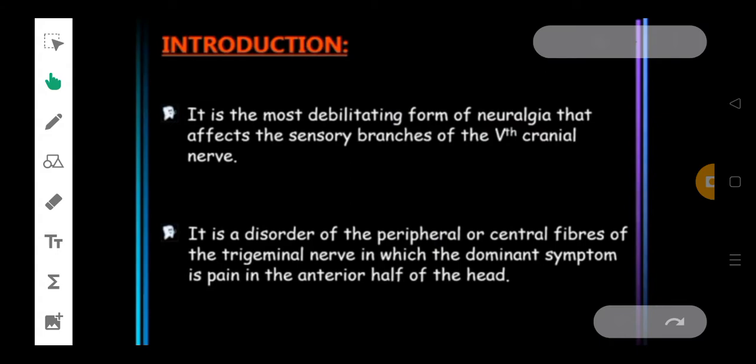It is the most debilitating form of neuralgia that affects the sensory branches of the 5th cranial nerve. I want you all to write the name of the 5th cranial nerve in the comments section. It is a disorder of the peripheral or central fibers of trigeminal nerve in which the dominant symptom is pain in the anterior half of the head.